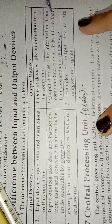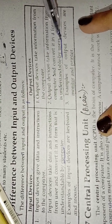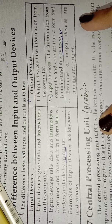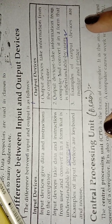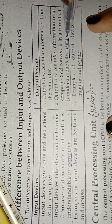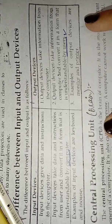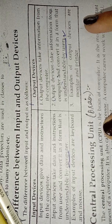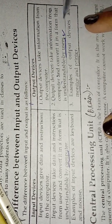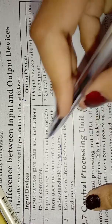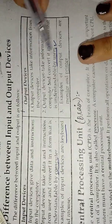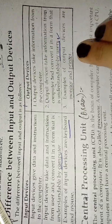Whatever I do is converted into a form understandable by the computer. An output device takes information from the computer and converts it into a form that is understandable by the user. It will be easy to understand. Examples of input devices are keyboard and mouse, and examples of output devices are monitor and printer.